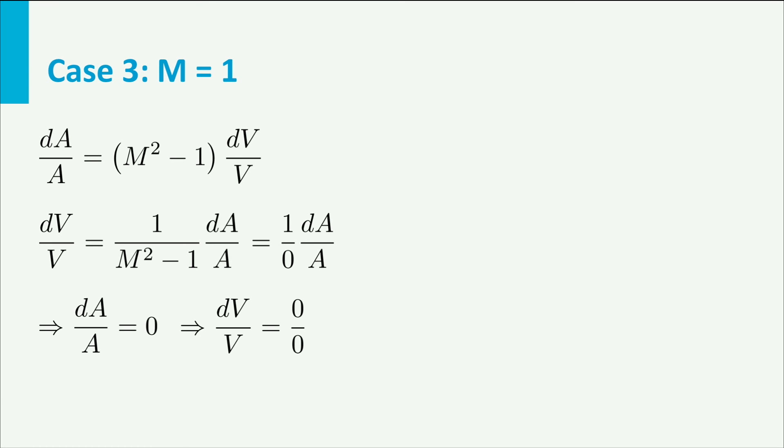Then there is no other possibility than that for a finite dV over V dA over A should be zero. Then we have 0 divided by 0, and this is finite. So dA over A is zero, and this can only be in the throat. So when we have a supersonic flow in the test section, the Mach number in the throat is 1.